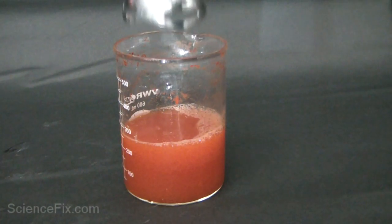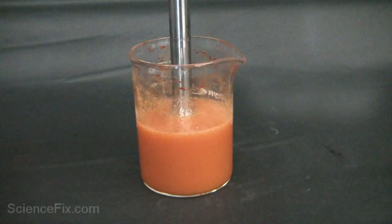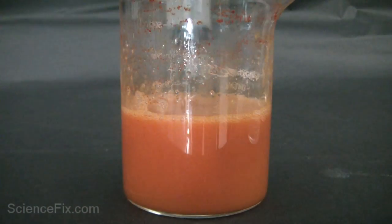Next we have to use an immersion blender to thoroughly mix 2 grams of sodium alginate solution into the watermelon juice.